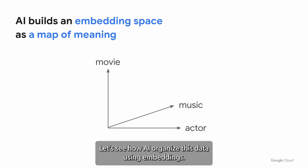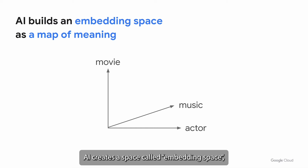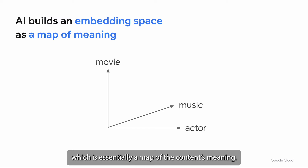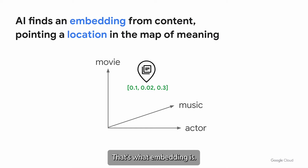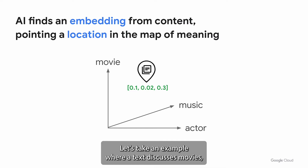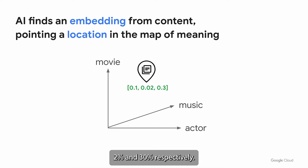Let's see how AI organizes data using embeddings. Once trained with specific content like text, images, or any content, AI creates a space called embedding space, which is essentially a map of the content's meaning. AI can identify the location of each content on the map — that's what embedding is. For example, if a text discusses movies, music, and actors with a distribution of 10%, 2%, and 30% respectively,